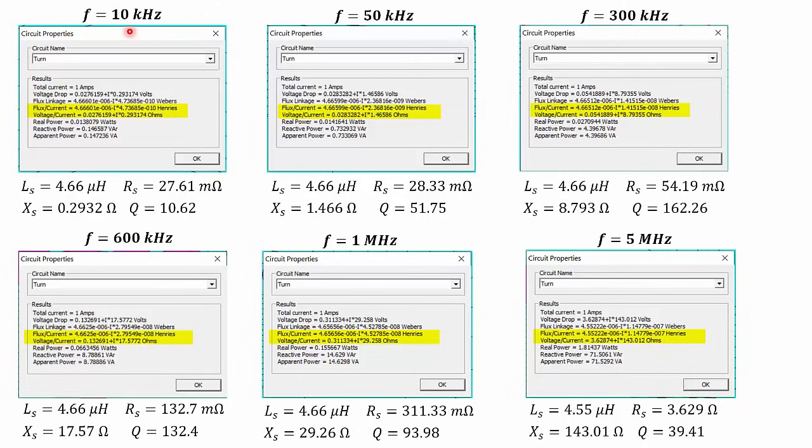Now here we have the analysis results at other frequencies. At low frequency, 10 kilohertz, we can see here the values, the inductance is pretty much the same, but the quality factor is lower. Then at 50 kilohertz, the quality factor increases, 51.7.